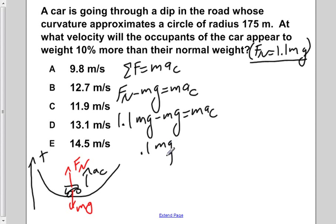If we now carry out the subtraction, we would have 0.1 mg is equal to ma centripetal. But 0.1 is simply the same as 1 over 10, so we can rewrite this as mg over 10 is equal to ma centripetal.